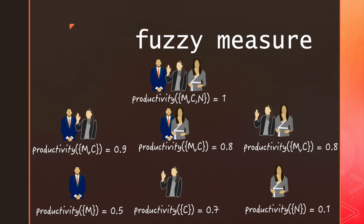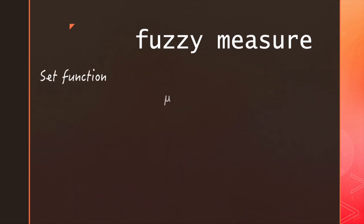These values, taken across all subsets, comprise what's called a capacity or a fuzzy measure. It's a set function, so it takes a set as an input, and then produces a real number as an output.